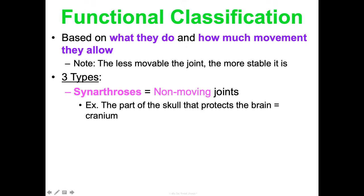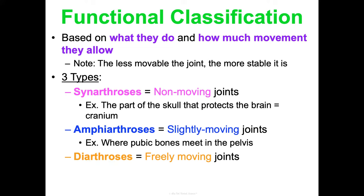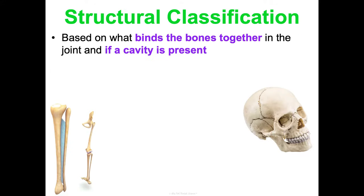There are three types of functional classification. First, synarthrosis (plural: synarthroses) are non-moving joints and thus the most stable — examples are the cranial bones protecting the brain. Second, amphiarthrosis (singular: amphiarthrosis) are slightly moving joints, like where the pubic bones meet in the pelvis. Third, diarthrosis (singular: diarthrosis) are freely moving joints — the least stable but providing the most movement, such as the knee or elbow.